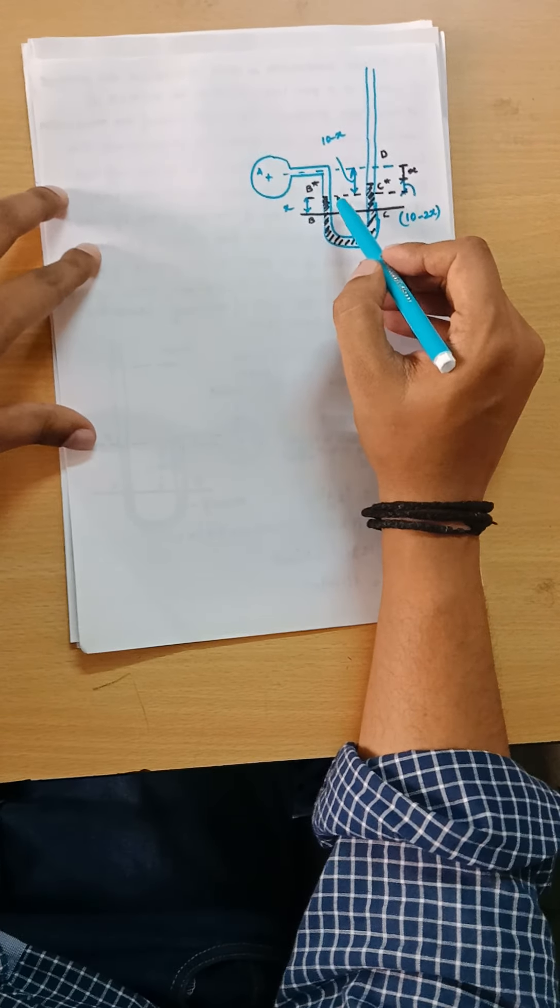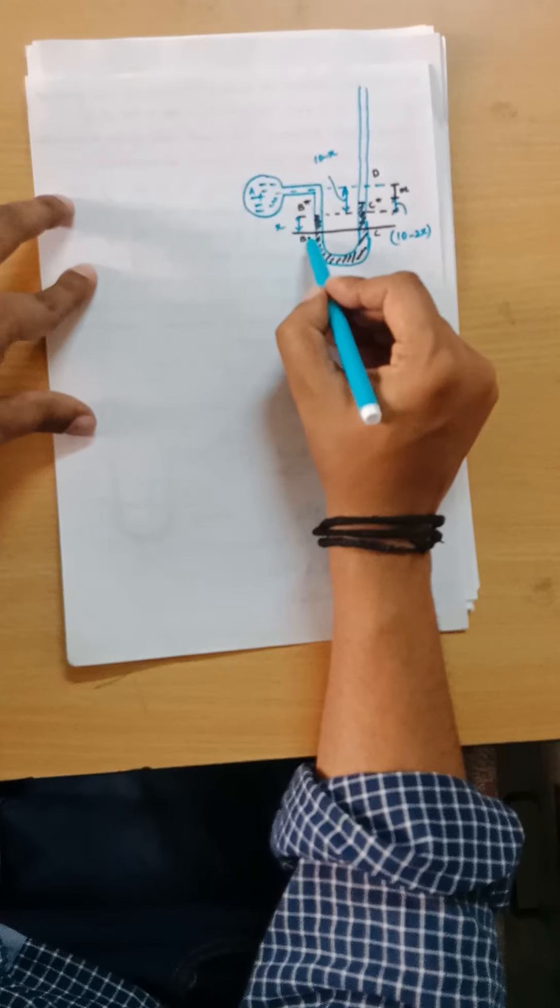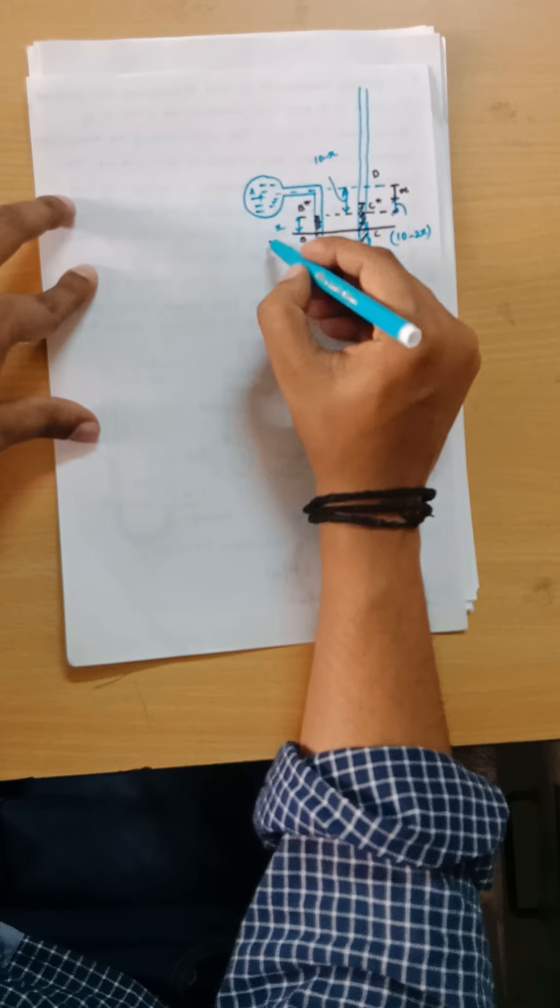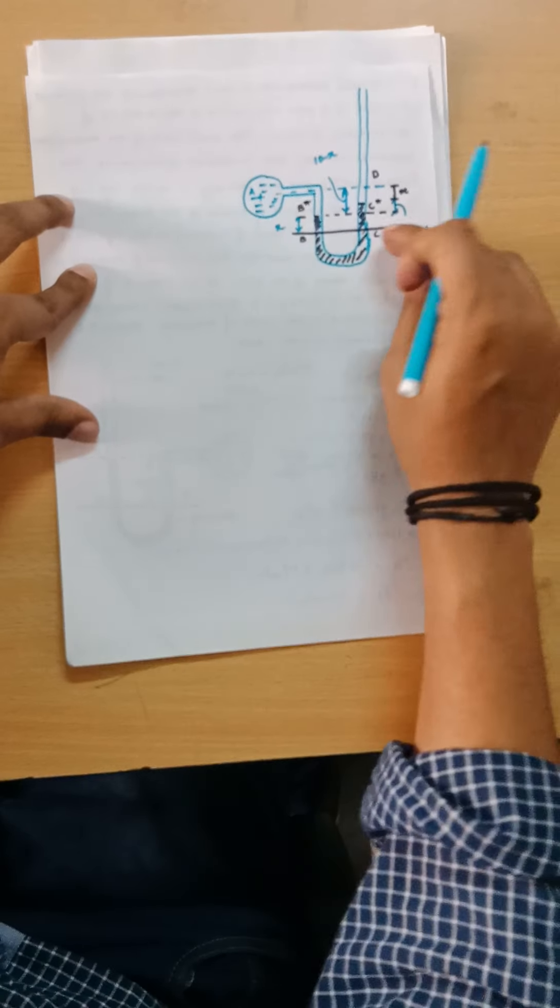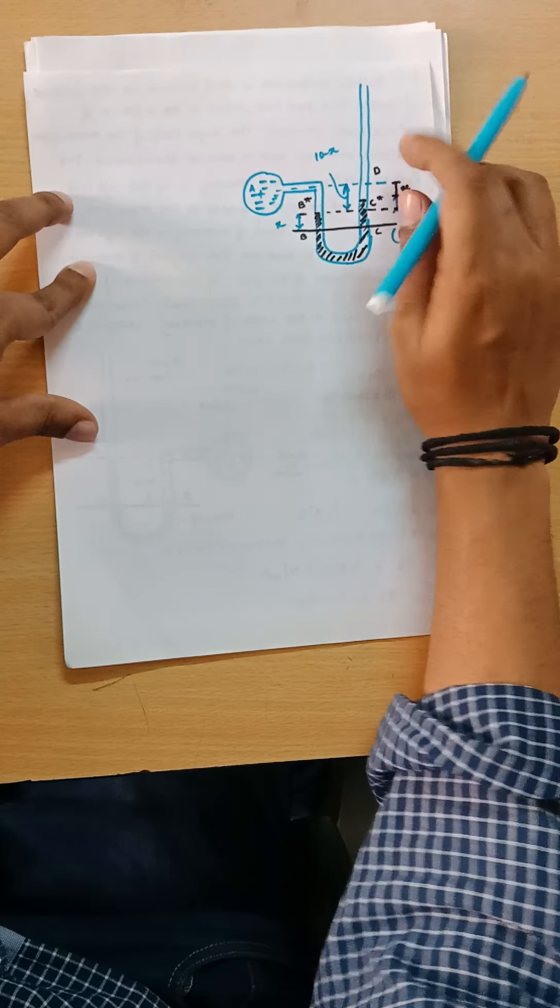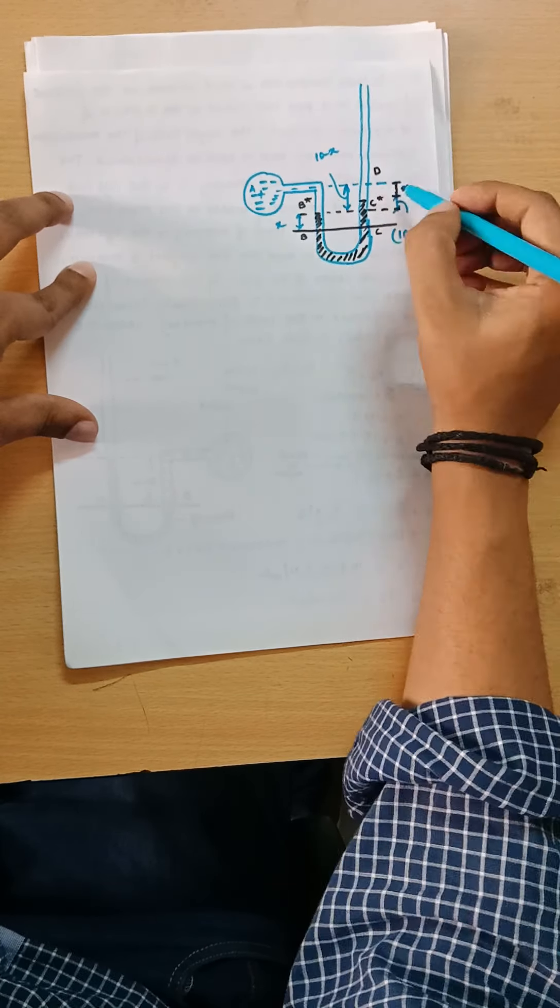So what will happen in this case? The mercury level, as you can see I have drawn a new diagram over here. Since the pressure is getting reduced, the pressure at this point is getting reduced, the mercury will rise in this.